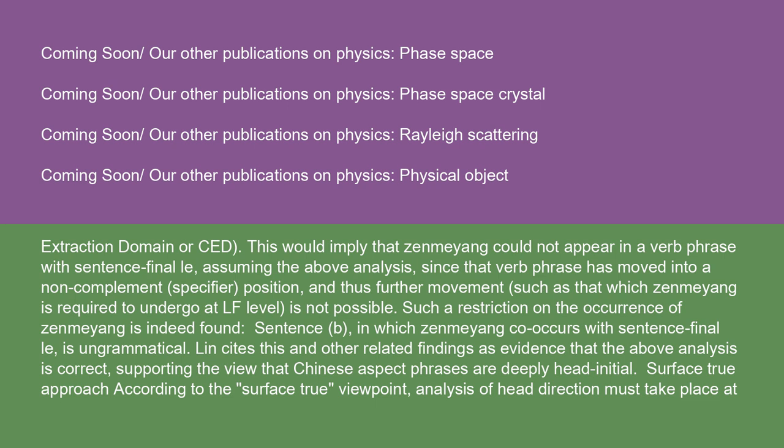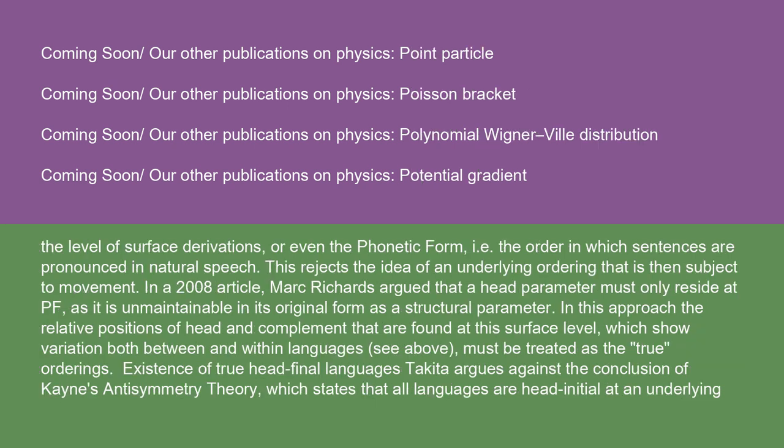Surface-true approach: According to the surface-true viewpoint, analysis of head direction must take place at the level of surface derivations, or even the phonetic form — i.e. the order in which sentences are pronounced in natural speech. This rejects the idea of an underlying ordering that is subject to movement. In a 2008 article, Mark Richards argued that a head parameter must only reside at PF, as it is unmaintainable in its original form as a structural parameter. In this approach, the relative positions of head and complement found at this surface level, which show variation both between and within languages, must be treated as the true orderings.